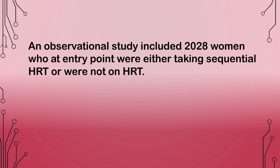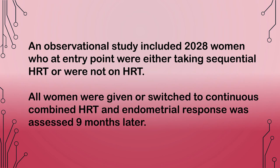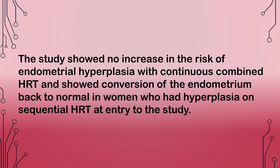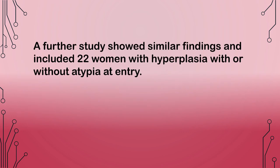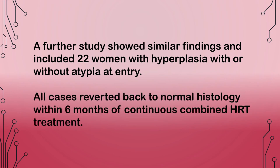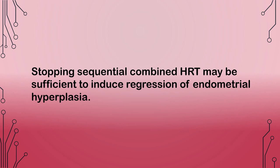An observational study included 2,028 women who were either taking sequential HRT or were not on HRT. All women were given or switched to continuous combined HRT and endometrial response was assessed 9 months later. The study showed no increase in the risk of endometrial hyperplasia with continuous combined HRT and showed conversion of the endometrium back to normal in women who had hyperplasia on sequential HRT at entry. A further study showed similar findings including 22 women with hyperplasia with or without atypia at entry — all cases reverted back to normal histology within 6 months of continuous combined HRT treatment. Stopping sequential combined HRT may be sufficient to induce regression of endometrial hyperplasia.